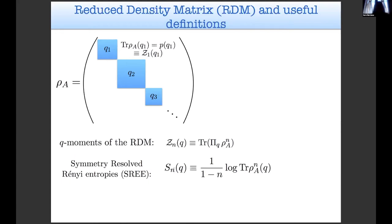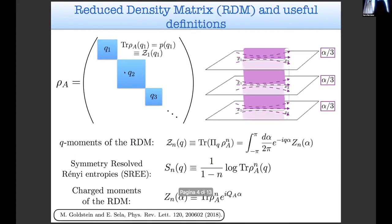We want to project our reduced density matrix in each of these blocks in order to define the q moments of the reduced density matrix, and from them we can define the symmetry resolved Rényi entropies. This definition requires knowledge of the entanglement spectrum but also its resolution in the different sectors, which is a very difficult task if one wants to have an analytical result. For this reason two years ago Goldstein used the Fourier representation of the projection operator in order to connect the q moments of the reduced density matrix to these functions which are called the charged moments, which are nothing more than a partition function on an n-sheeted Riemann surface with insertion of a flux.